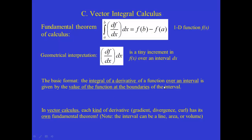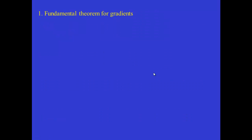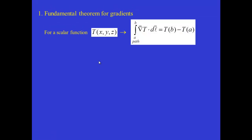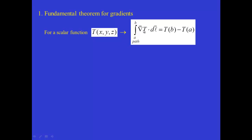Note that when we talk about an interval for a one-dimensional function, that's a very simple concept. But in three dimensions, that interval — depending on the kind of integral we're doing — can either be a line, or an area, or a volume. So let's look at the fundamental theorem for gradients. If we have a scalar function t of x, y, and z, then the integral of its derivative — the gradient — dotted into a path vector, integrated from a to b along that path, is given by the difference in the function between the endpoints.